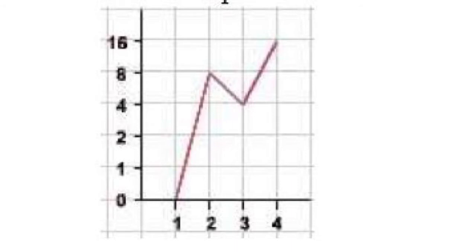Here's another example with some different data. This time we are starting at zero, which is a good start, but this data is a little bit misleading because of the way that the graph is scaled. You can see that it goes 0, 1, 2, and then it jumps to 4, then an even bigger jump to 8, and an even bigger jump to 16. Instead of going up by the same consistent amount, the data is making big jumps, and so that's affecting the way that the graph looks.